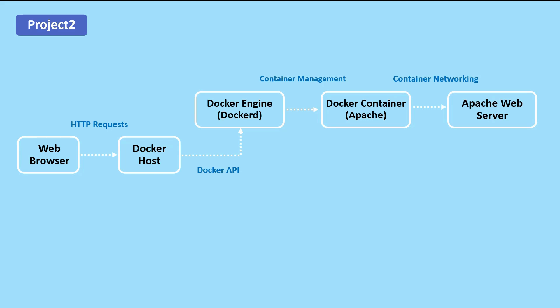In summary, the dockerized Apache web server project uses Docker containers to isolate the Apache web server and its dependencies from the host machine. This provides a more consistent and reliable development and deployment environment while also making it easier to manage and scale the web server.